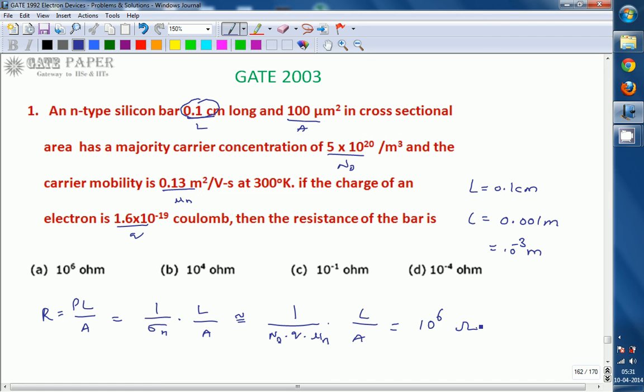The resistance of the given semiconductor bar is 10⁶ ohms. The correct answer is A. Thank you.